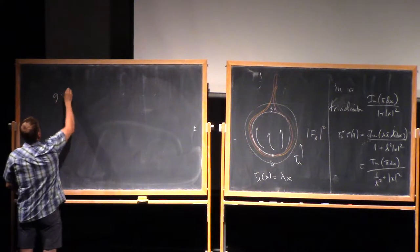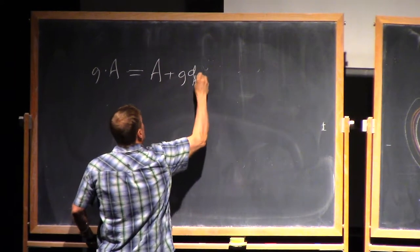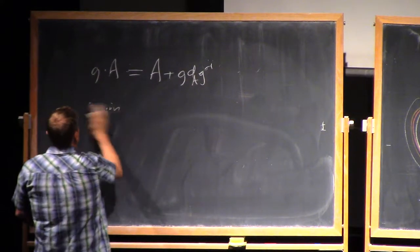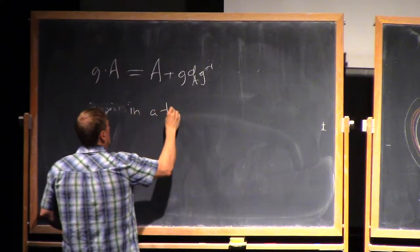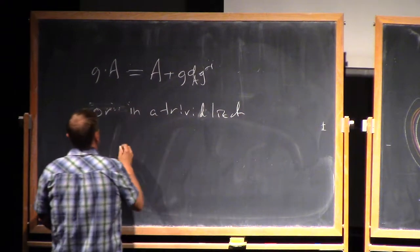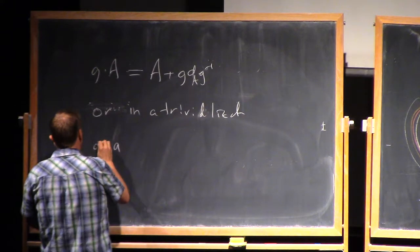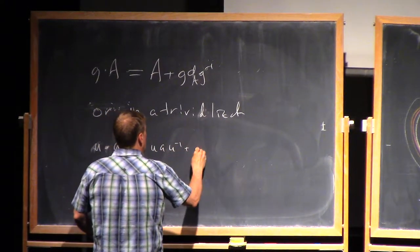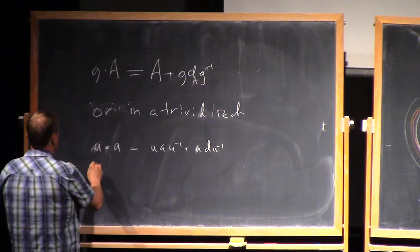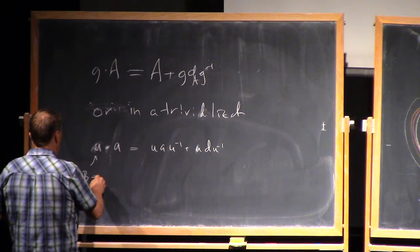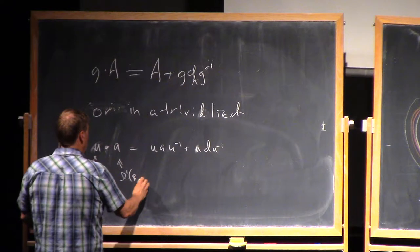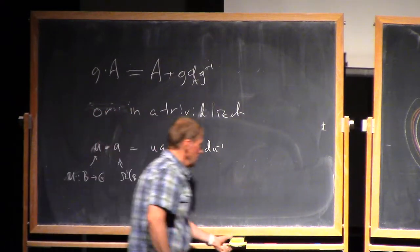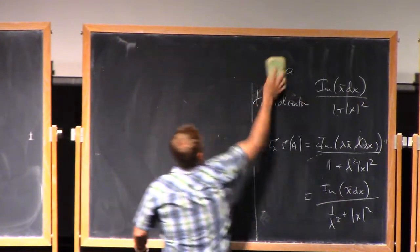So remember, this is the way things act, in a trivialization. So this is just a map from some ball to the group, and this is a one form on the ball with values in the Lie algebra. And this is a formula for the action. Now, we need to complete these things.